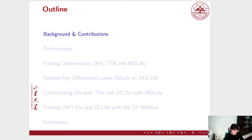In this presentation, we start with the background and contributions. Following that, we briefly recall some related preliminaries, then we propose an automatic tool for the search of deterministic related-key truncated differentials and multidimensional linear approximations. After that, we will introduce the improved related-key differential-linear attack on AES-192.